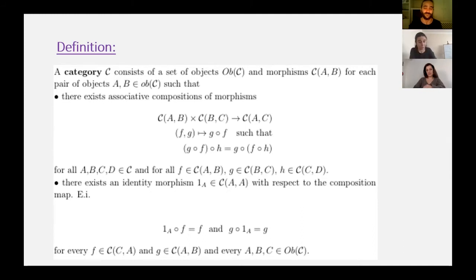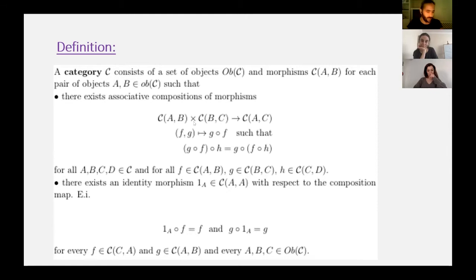If you are seeing this definition for the first time, it might take a little bit of time to sink in. But as you see, it is very simple with very little requirements. Any mathematical structure can be endowed with such a structure — anything can be a category, and that's the difficult part of category theory. That's why it gives you an overview of mathematical structures.